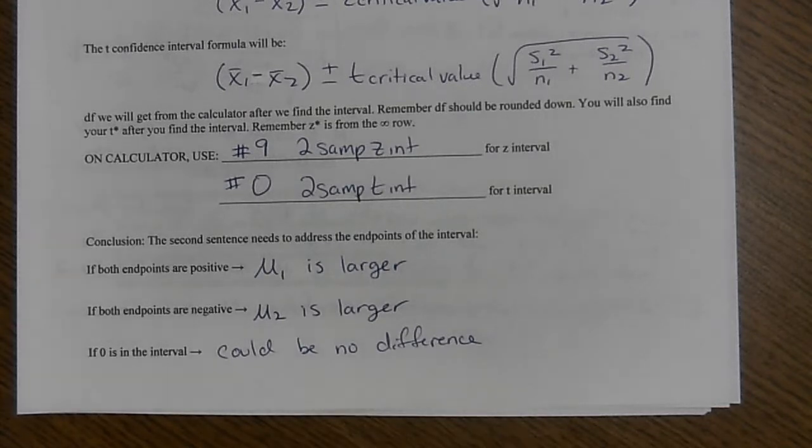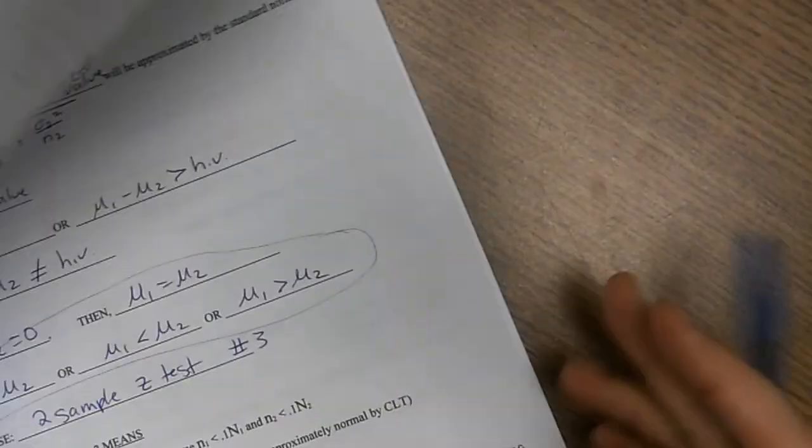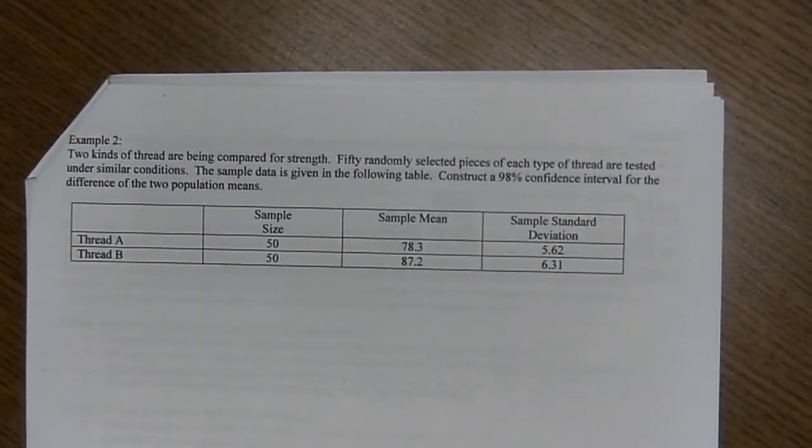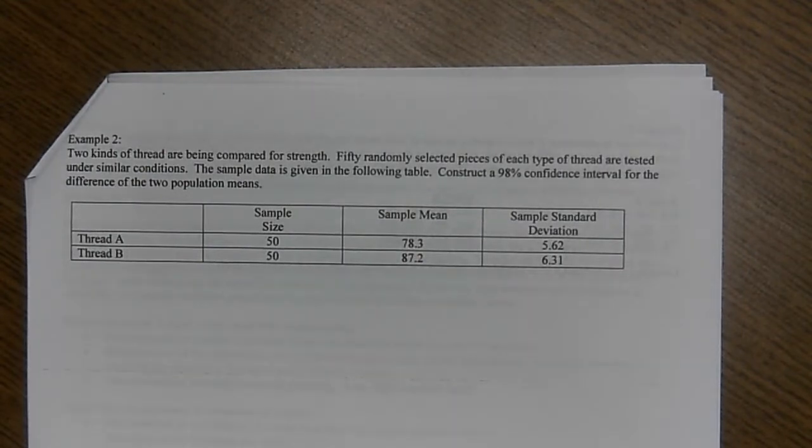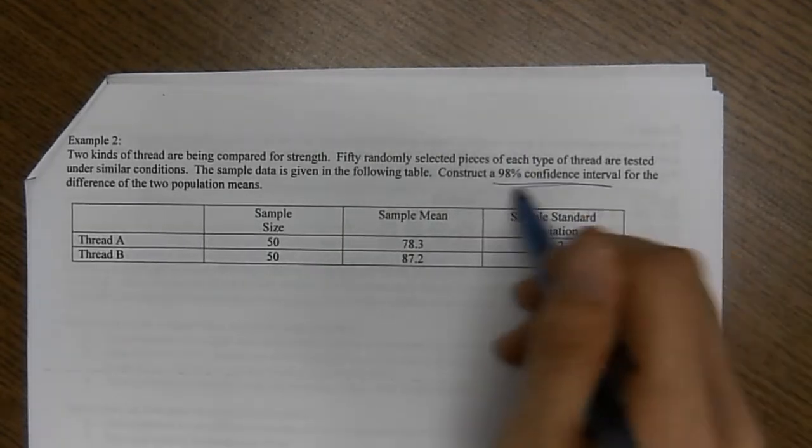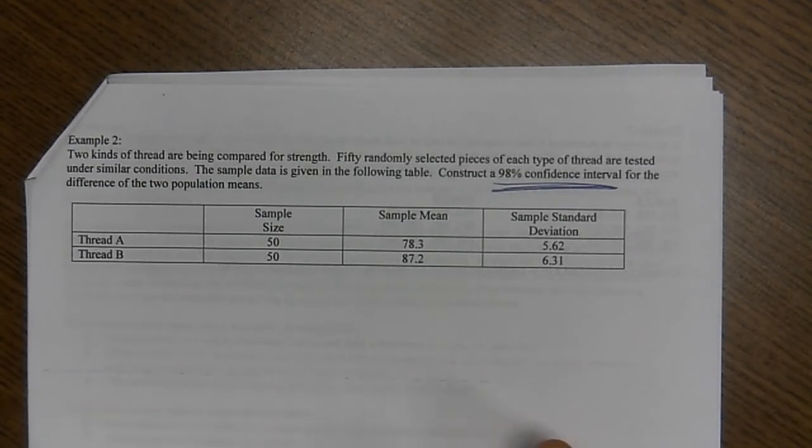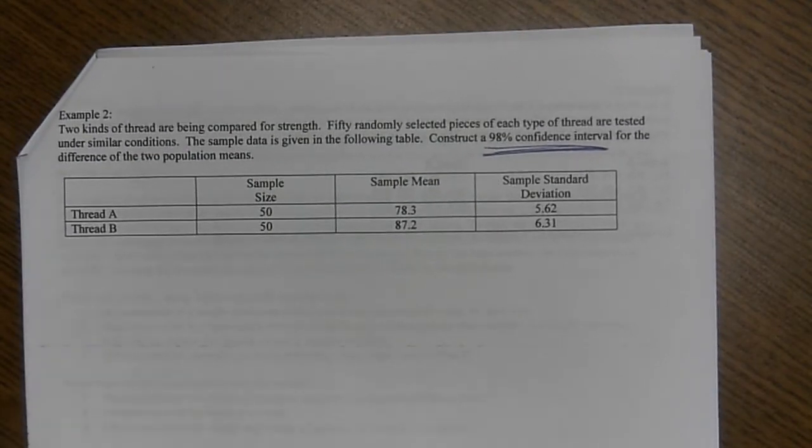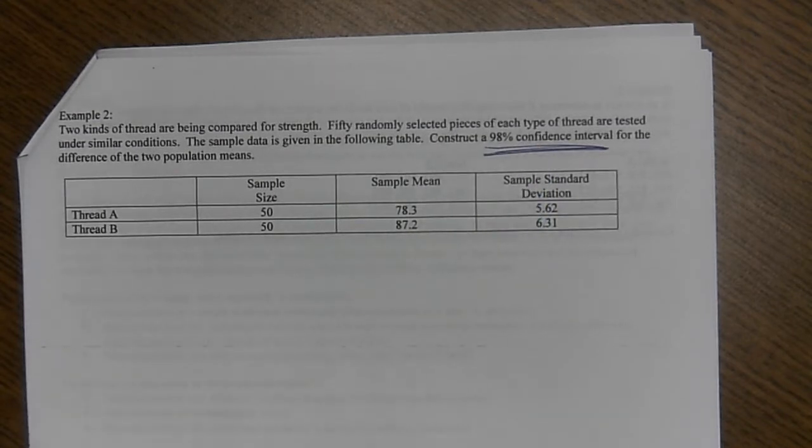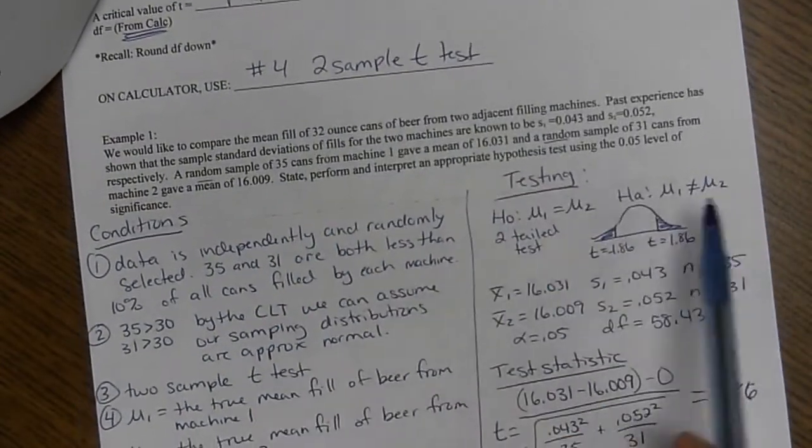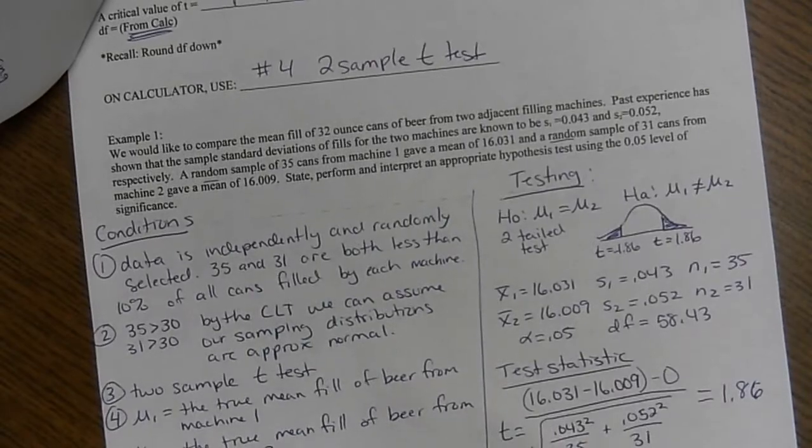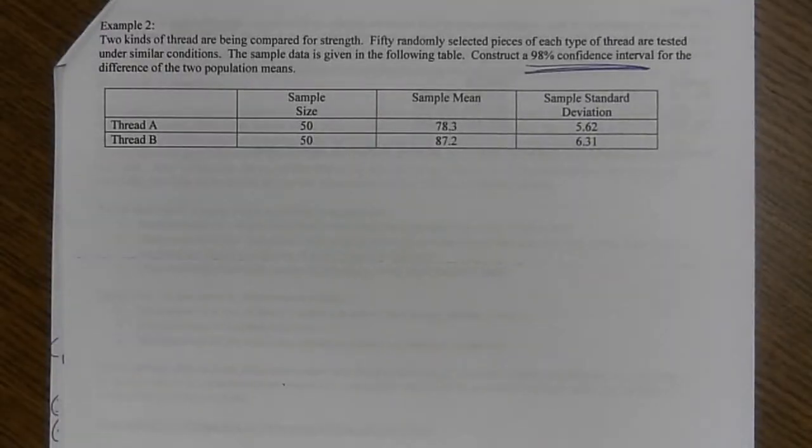So we're going to do two examples. One's just regular and then we do the annoying one. So we have two kinds of thread are being compared for strength. Fifty randomly selected pieces of each type of thread are tested under similar conditions. The sample data is given in the following table. So construct a 98% confidence interval for the difference of the two populations mean. First of all, if it tells you to construct an interval, construct the interval. If it says state and perform a test and it usually has some alpha level, that's when you know it's a hypothesis test.